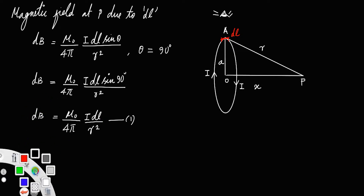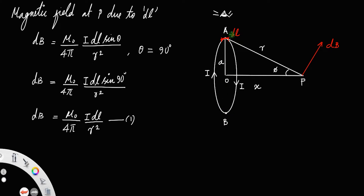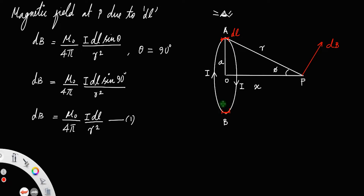This magnetic field is a vector quantity, so it has a direction, and its direction will always be perpendicular to the length AP. Let us call this dB, and take this angle as φ (phi). There is a diametrically opposite point for A — let us say B — and there is a small current element dL at the point B also.